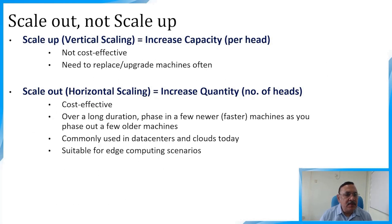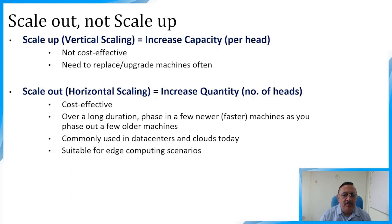An important concept is scale-out versus scale-up. Scale-up (vertical scaling) means replacing the old system with a new powerful one, which is costly. Scale-out (horizontal scaling) means adding more nodes — not necessarily very powerful ones. Scale-out is cost-effective over a long duration: you phase in newer faster machines as you phase out older ones. This approach is commonly used in data centers and clouds today and is suitable for edge computing scenarios.